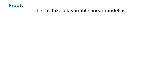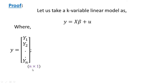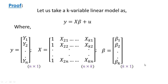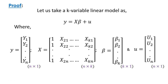We consider a k-variable linear model: y = Xβ + u, where y is an n×1 column vector of observations on the dependent variable, X is an n×k matrix of observations on the explanatory variables, β is a k×1 column vector of the parameters, and u is an n×1 column vector of disturbances.